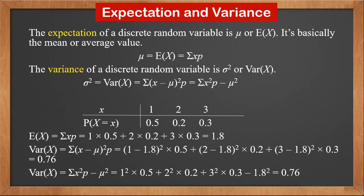Using the second approach, Var(X) is Σx²p - μ². It is 1² × 0.5 + 2² × 0.2 + 3² × 0.3 - 1.8². The result is also 0.76.